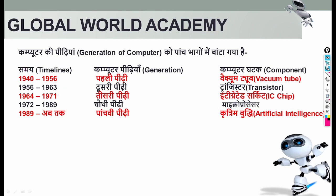Now, one by one, we will discuss each generation. There are two types of exam questions. The first type asks about the time period of a generation. The second type asks which component was used in a generation: first generation used vacuum tube, second used transistor, third used IC, fourth used microprocessor, and fifth used AI technology.